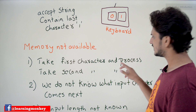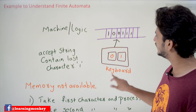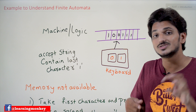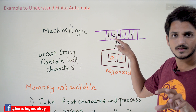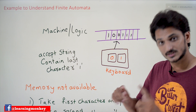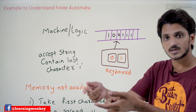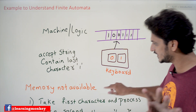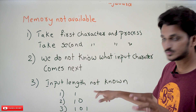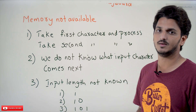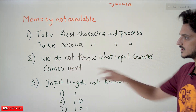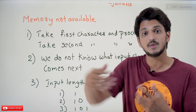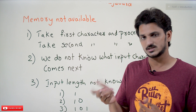The important point to remember: if you don't have memory, you must take the first character and process it immediately. After typing the first character it has to be processed right away because there is no memory to save it. Then take the second character and process it, then the third, then the fourth. This is how execution works. Also, we don't know what input character comes next.